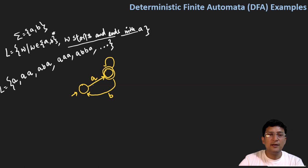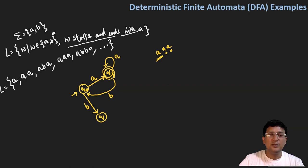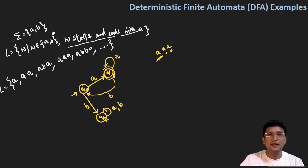After getting an A, if I again get an A, I should stay in the final state — because with three A's, with one A I move to the final state, and with another A I should remain at the final state. Now, we have not shown the transition of B from the initial state. Let's name all states: this is q0 and this is q1. So at q0, if I get a B, I should move to the dead state, because the language starts and ends with A — if it starts with B, this is not the desired case. At the dead state, if you get an A or B, that does not matter; you should stay at the dead state only. So this is the DFA for the string that starts with A and ends with A.